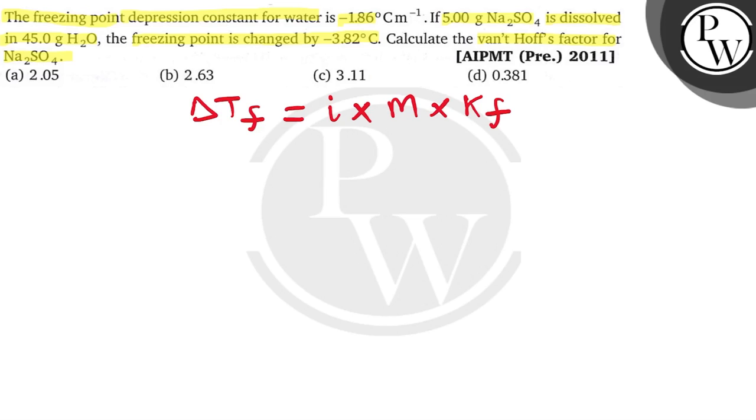According to the question, the freezing point is given as 3.82. So 3.82 is equal to i. I have to calculate into molality.